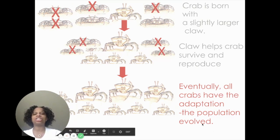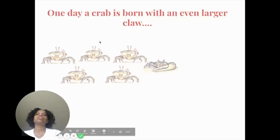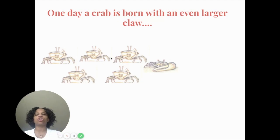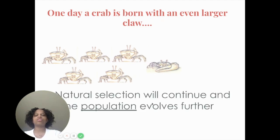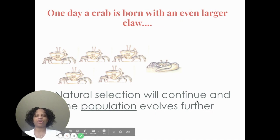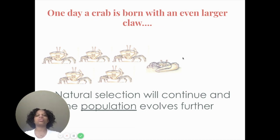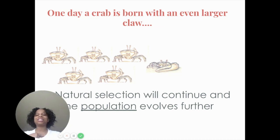Eventually all the crabs have the adaptation — the population evolved. Then one day a crab is born with an even larger claw. Natural selection will continue as the population evolves further. I want you to think about how this even larger claw could happen and what reasons there might be for a larger claw present in the population — we are going to get into that next week.